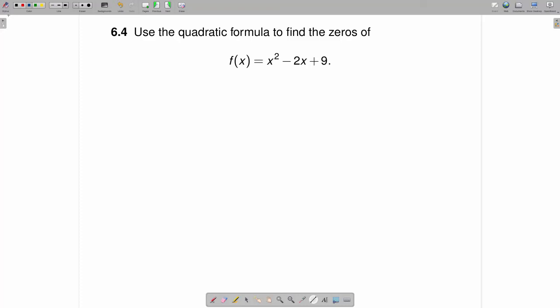Use the quadratic formula to find the zeros of f(x) equals x squared minus 2x plus 9. When the question asks us to find the zeros of this function, that's the same as saying solve for the x values such that f(x) equals 0.